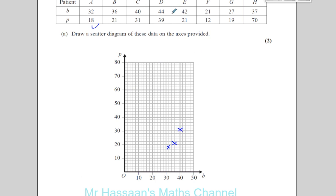That's patient D. Then patient, sorry, patient C. Patient D is 44 and 39. 44 and 39, it's right there. And then you got 42 and 21. 42 and 21.